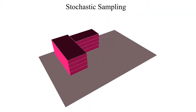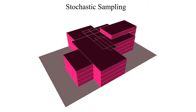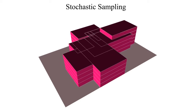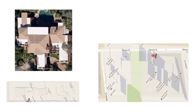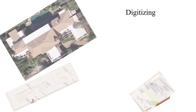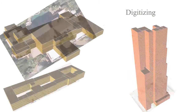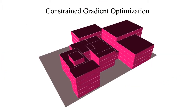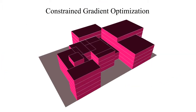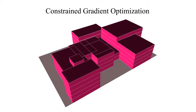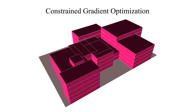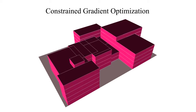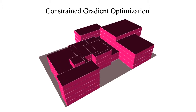The first step is to generate valid layouts using statistical sampling or digitising maps to replicate existing layouts. Sampled or digitised layouts are then further optimised using selected hard and soft constraints. We employ a constrained gradient descent method described in the paper.